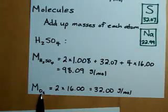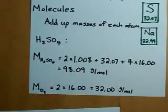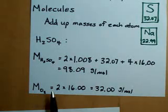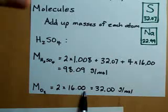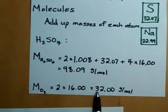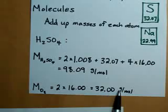If we wanted to calculate the molar mass of something like O2, we'd do the exact same thing. Two times the molar mass of oxygen, and that's all there is to this molecule. We get 32 grams per mole.